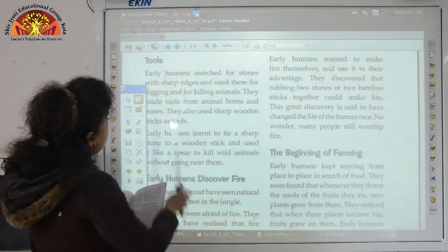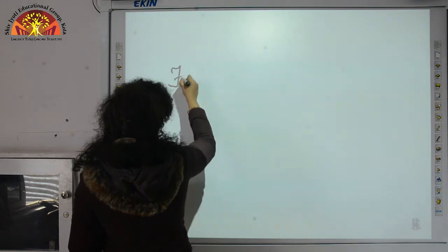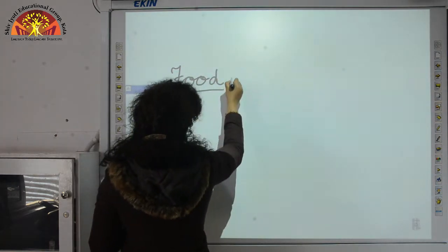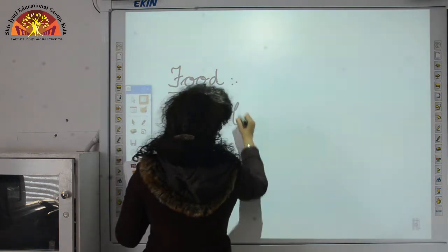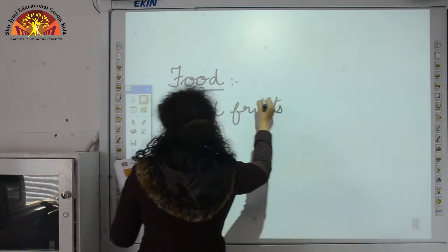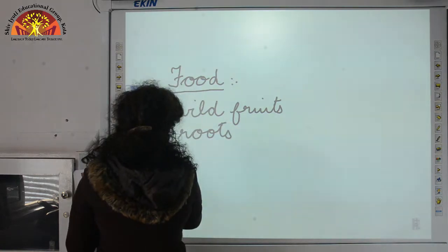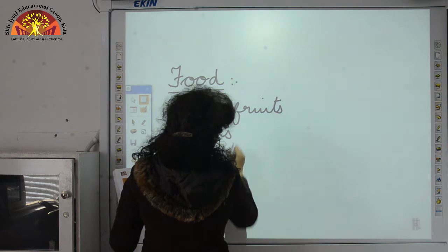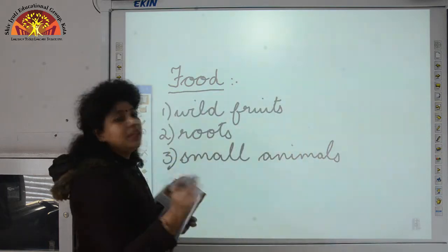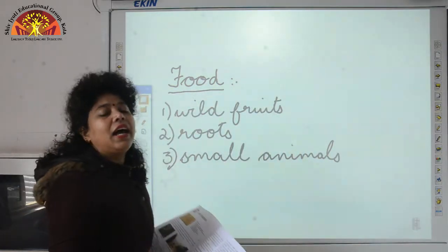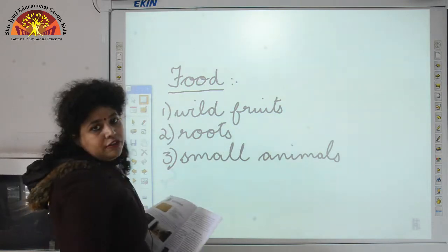Let us now talk about the food that early humans ate. First, they used to eat wild fruits and roots of plants. They also used to eat the flesh of small animals. So these were the different types of food — wild fruits, roots, and flesh of small animals.